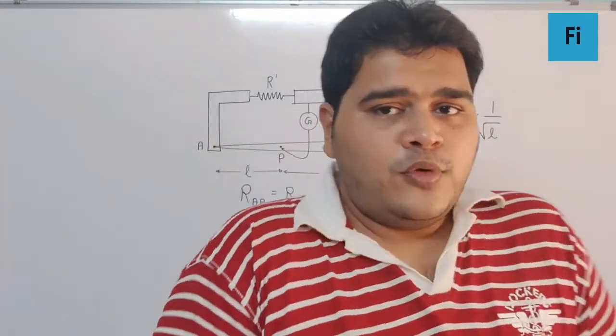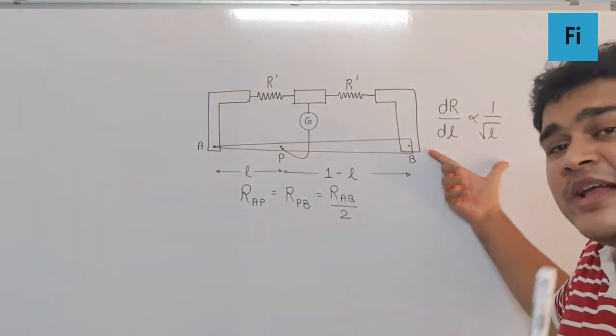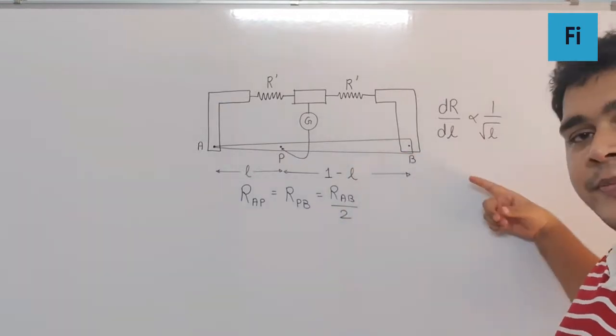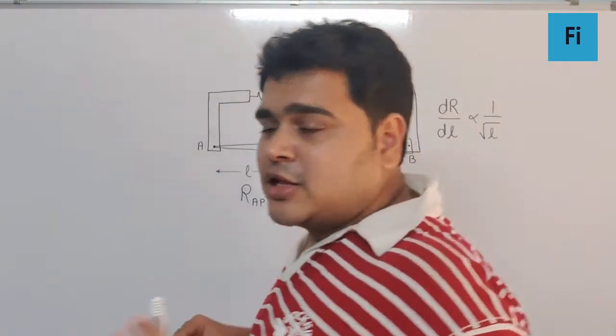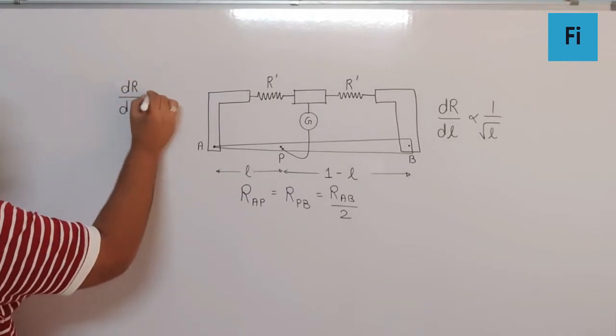Now, we need to use this relation between the resistance and length to find the total resistance AP.